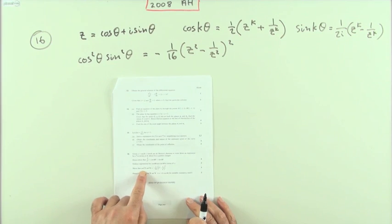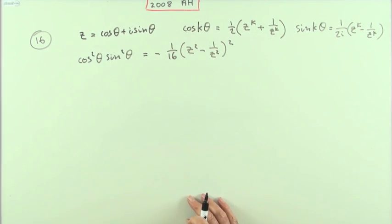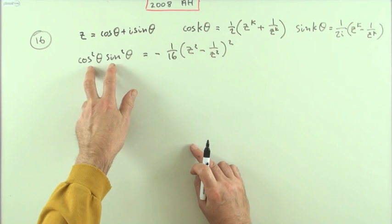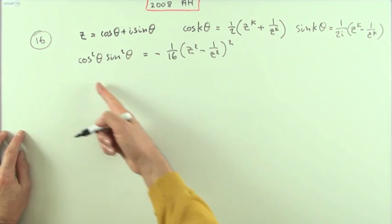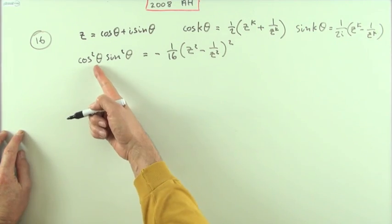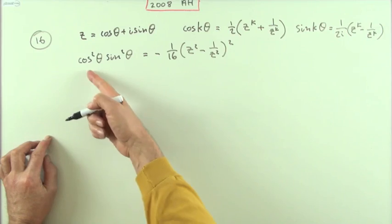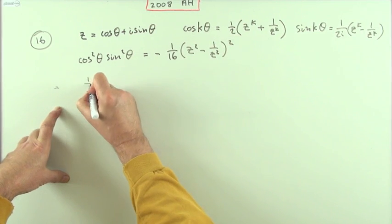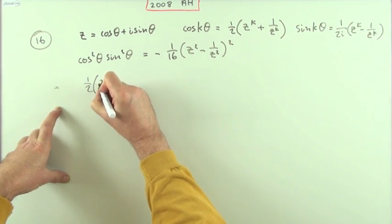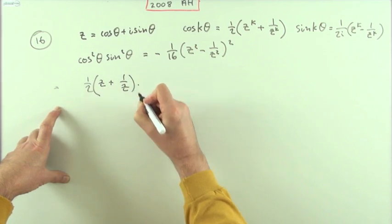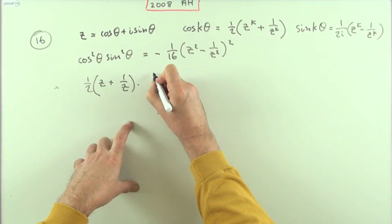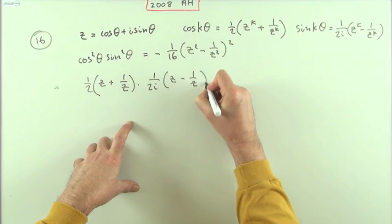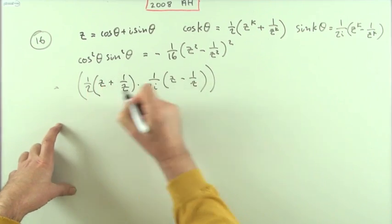Next part: show that cos²θ·sin²θ gives the stated expression. Since k is 1 here, cos(θ) = one half of (z + 1/z) and sin(θ) = 1 over 2i times (z - 1/z). The whole product cos²θ·sin²θ means squaring each of those expressions.